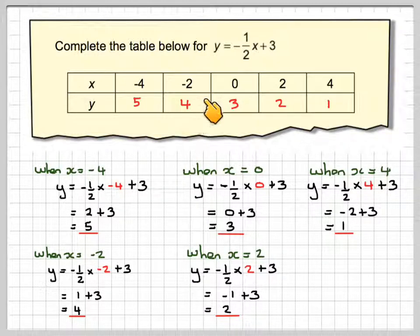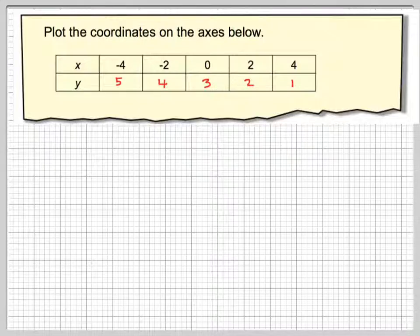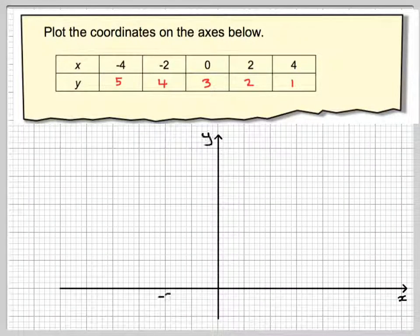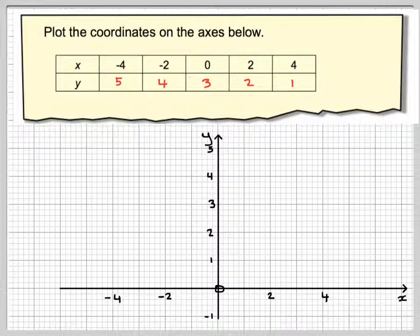Now we have a set of table which we can plot onto a graph. The next part of the question is plot the coordinates on the axis below. Here's the axis, and I need to plot these points.